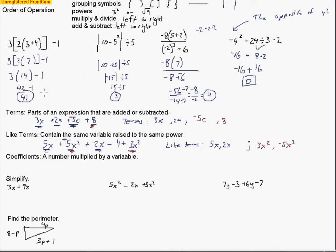Now let's look at coefficients — the number multiplied by the variable. For example, in 3 + 2x + 5x²: the 3 stands alone with no variable, so it's called a constant, not a coefficient. In 2x, the 2 is the coefficient. In 5x², the 5 is the coefficient of x². So 2 and 5 are the coefficients in this expression.